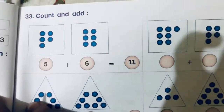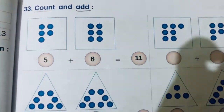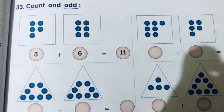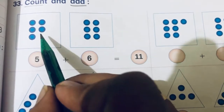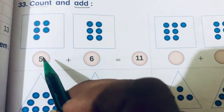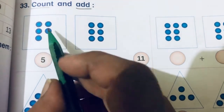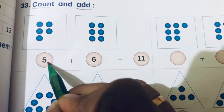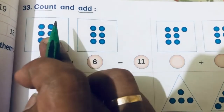Question number 33: count and add. First one is done for us. You need to count the circles and write the number for them, and then you have to add them — that means find the sum.